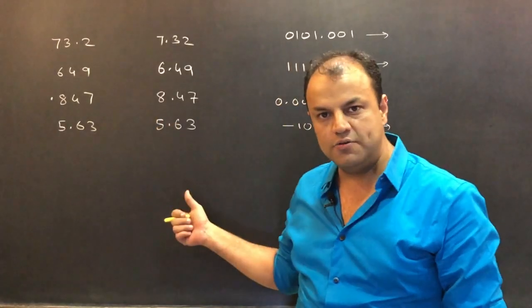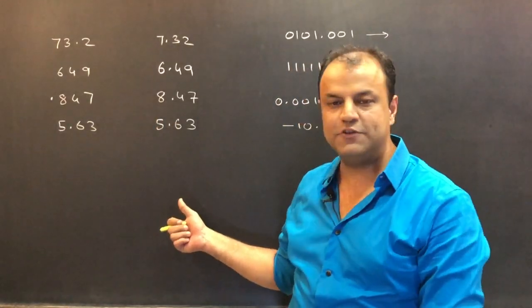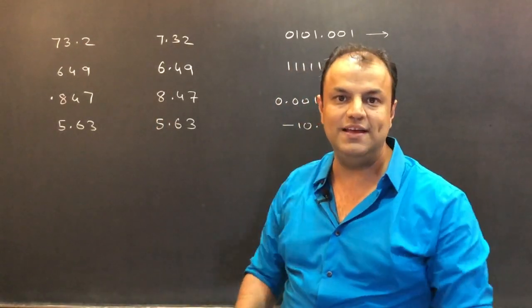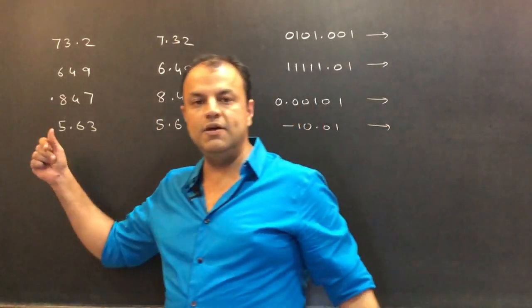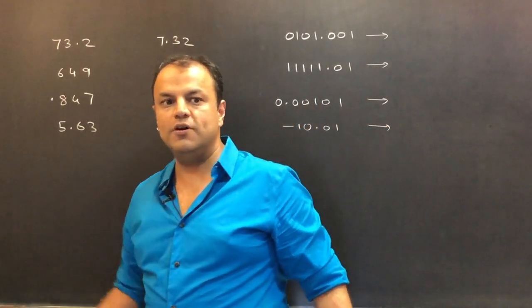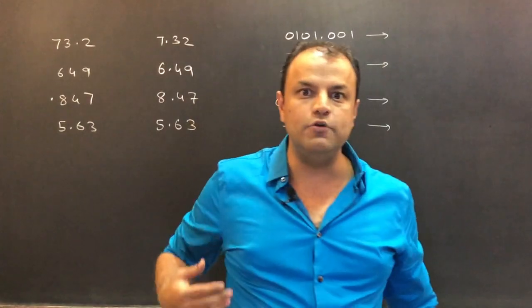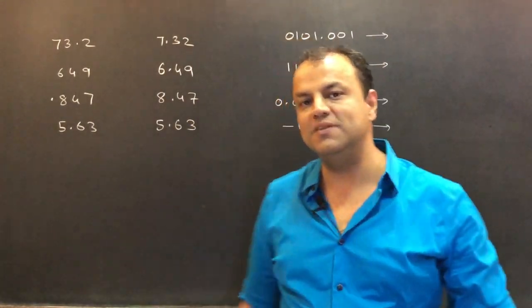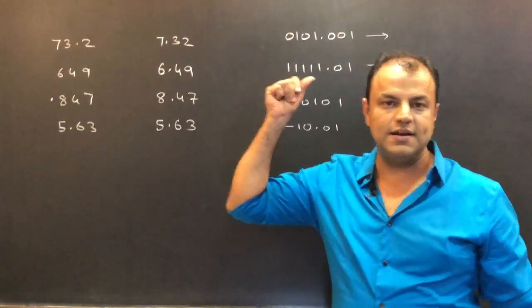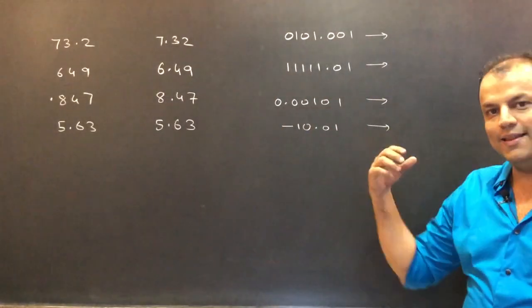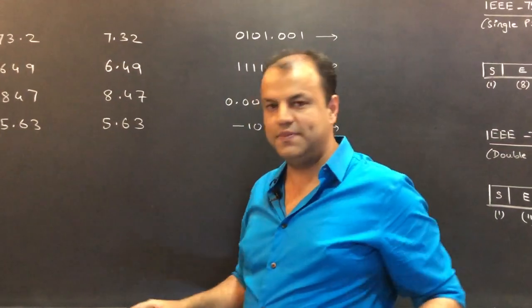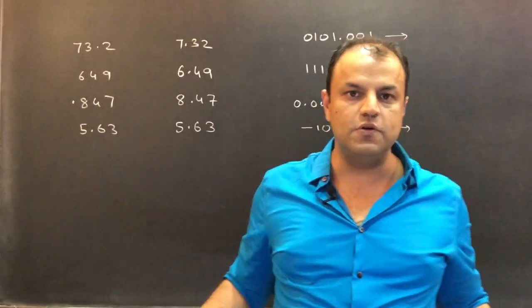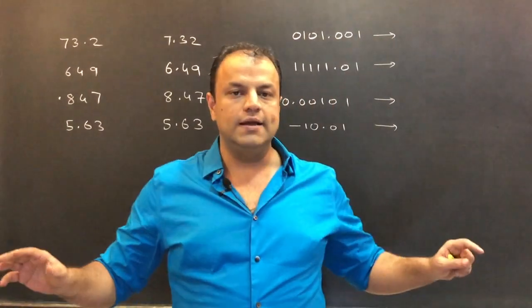First I'll tell you how we handle it in fixed-point numbers, which is very easy. Then we go into floating-point numbers, understand why we have to do normalization of floating-point numbers. Then we will derive this format, and then we will take examples and solve it. That's what we're going to do in this video.